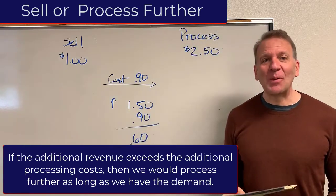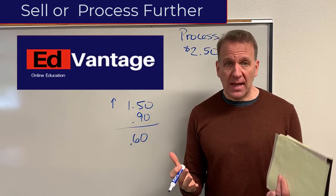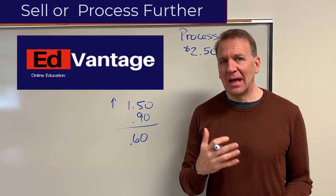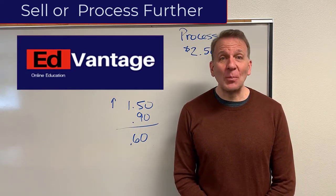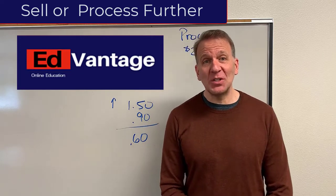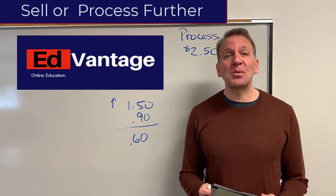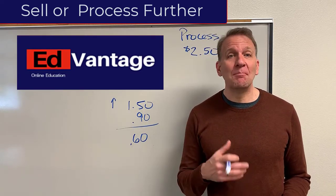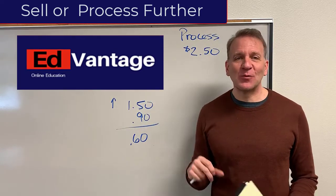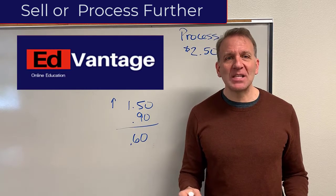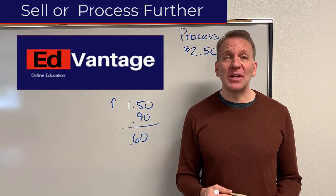That's the sell now or process further decision. This is the easiest one of all the decision-making processes that we've been going over in the last few videos. That's the end of our decision-making processes — like make or buy and special orders — this is the sell or process further one. We're going to go on to a new subject matter now in managerial accounting, and I hope to see you in those future videos.